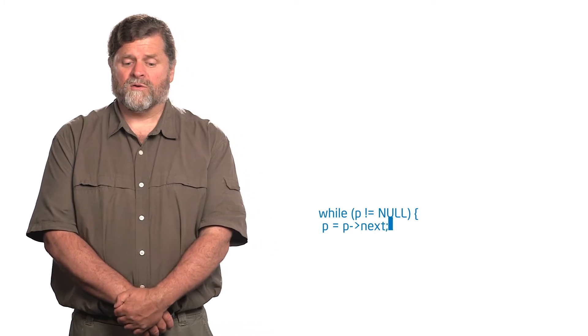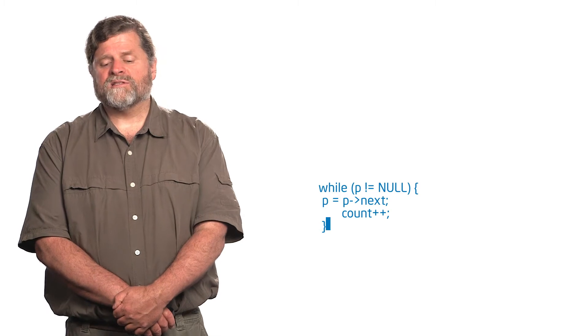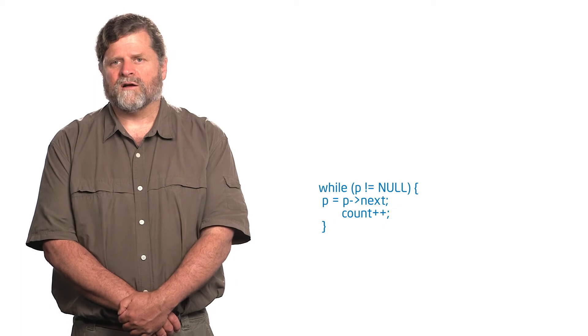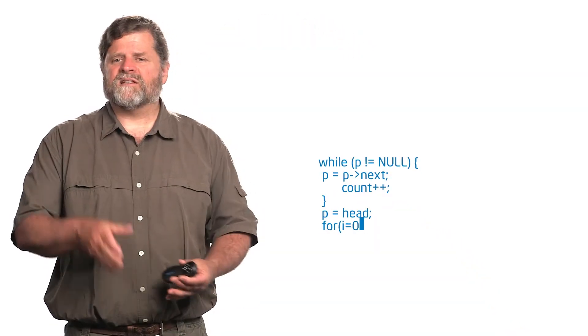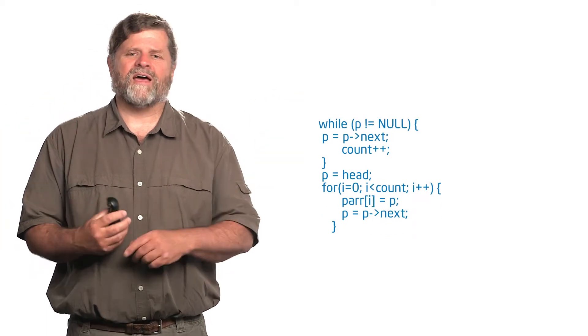Let me show you my solution — and it's not pretty. First step: I'm going to go through that list and count how many elements there are. I walked the list once just to see how many elements there are. Now that I know the length, I can create an array big enough to hold it, and I'm going to save a pointer to each element of that list in an array. That's the second pass of this data.